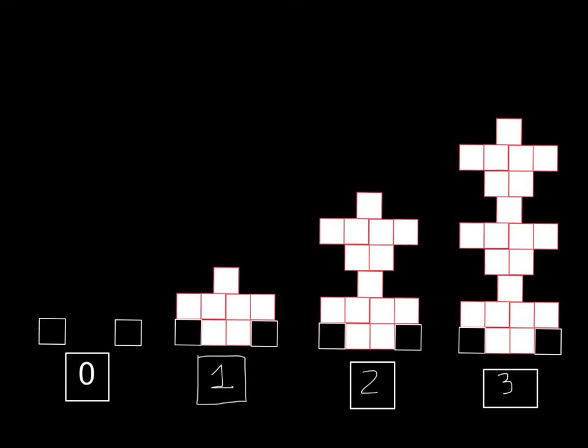You can also see that the pattern is growing by 7 each time. Therefore, our constant is 2 and our multiplier is 7. We're going to prove this in the next slides.